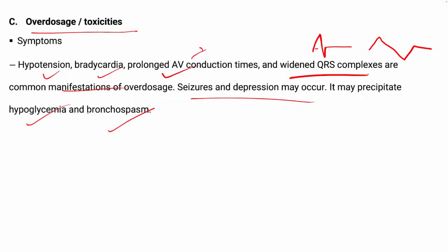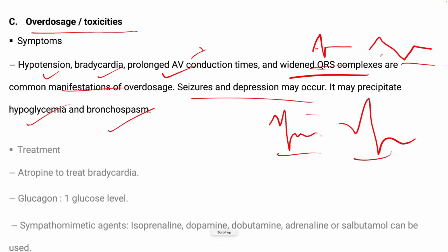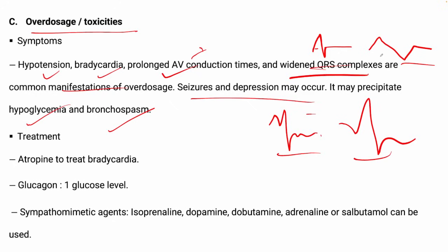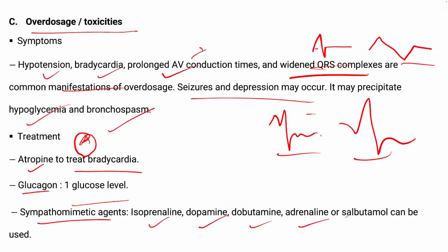The QRS complex can be widened and various defects can be observed on the ECG. For treatment of beta blocker overdose — a common exam question — you can give atropine to treat bradycardia, glucagon, and adrenergic agonists such as isoprenaline, dopamine, dobutamine, adrenaline, and salbutamol to counteract the symptoms of overdose.